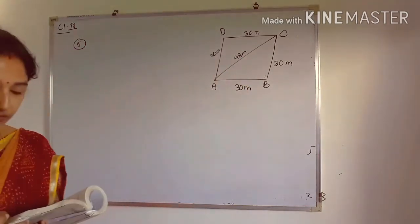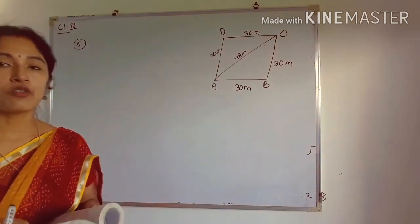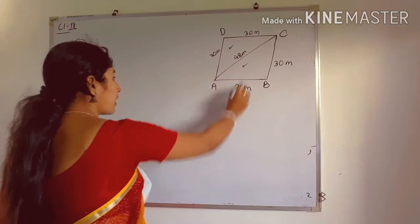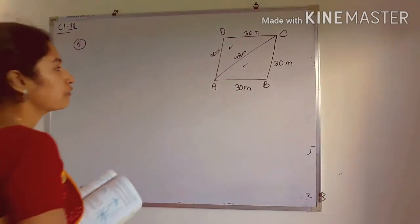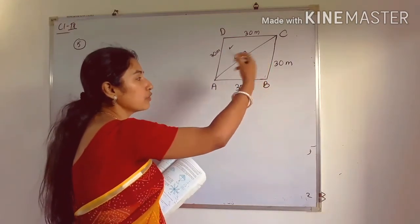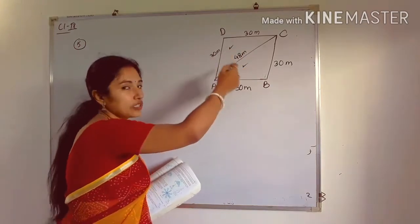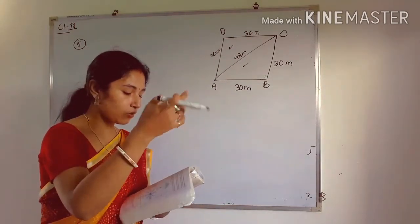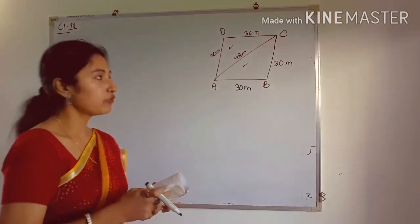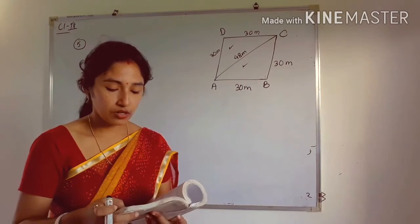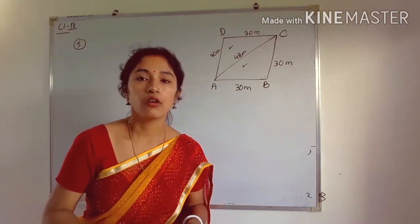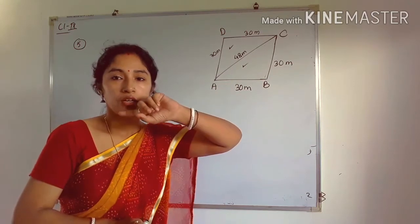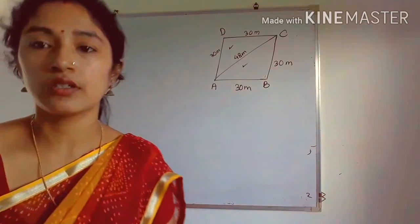First we find the area of the rhombus. The diagonal divides the rhombus into two triangles with the same sides, so if we find the area of one triangle and multiply by 2, we get the total area. Then, dividing the total area by 18 gives the area per cow.